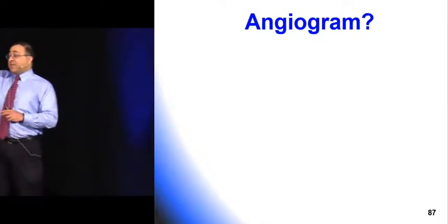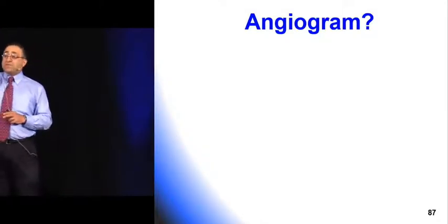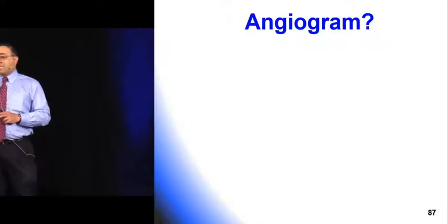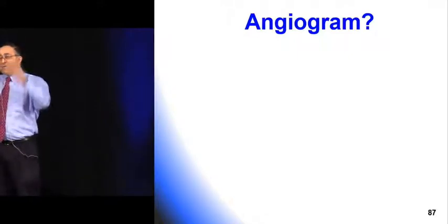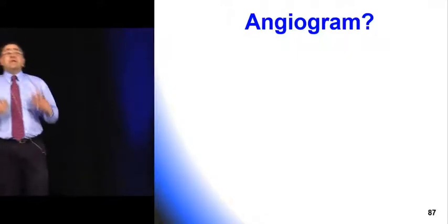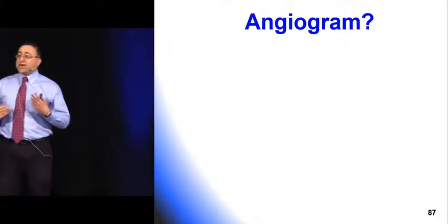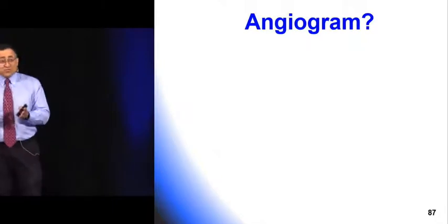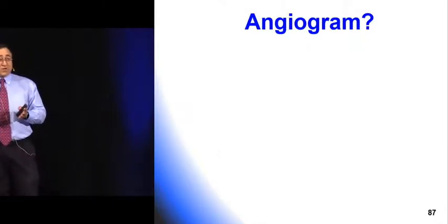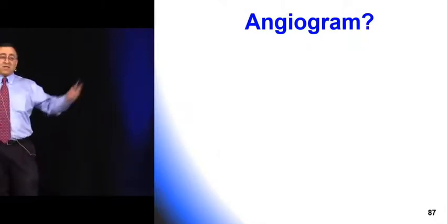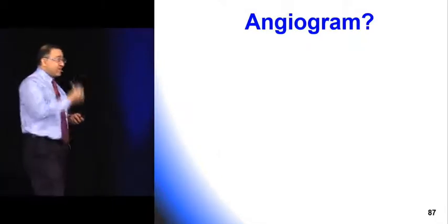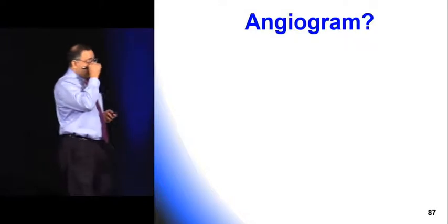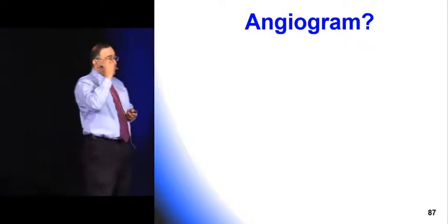Traditional angiogram is not only diagnostic but also therapeutic — while doing the angio you can instill local vasodilators like papaverine or local thrombolytics and break apart the clot. You can't do that with CT angio. On the angiogram you can see a nice column of dye and then nothing after that — very easy to diagnose.